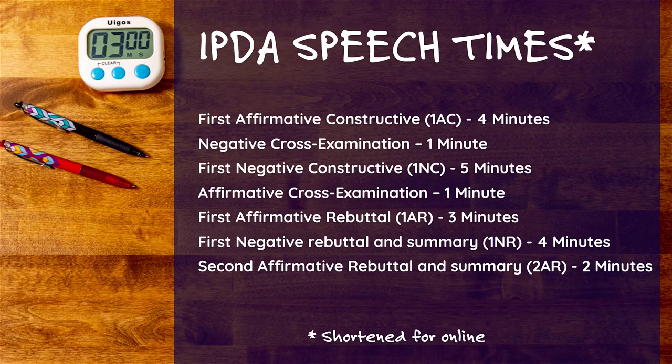The first speech of the debate is the first affirmative constructive, or 1AC for short. It is a four-minute speech. Next is a one-minute period of negative cross-examination time. This is followed by the first negative constructive, or 1NC, that is five minutes long. Next is another one-minute cross-examination for the affirmative team. Then we have the three-minute first affirmative rebuttal, also known as the 1AR. That speech is followed by the four-minute first negative rebuttal and summary, sometimes called the 1NR.